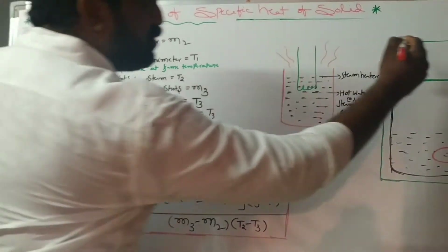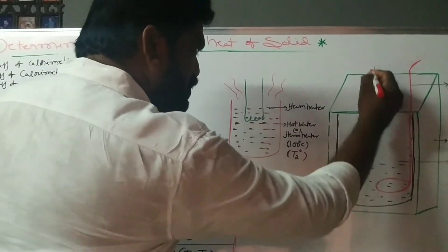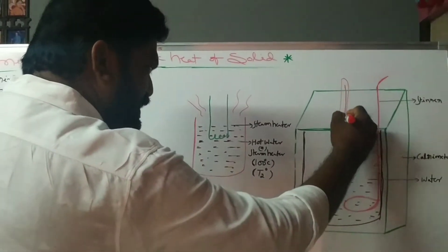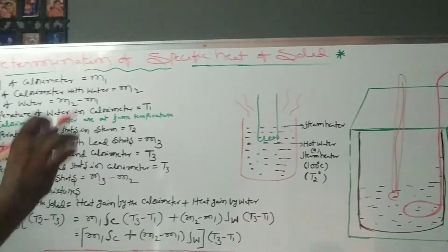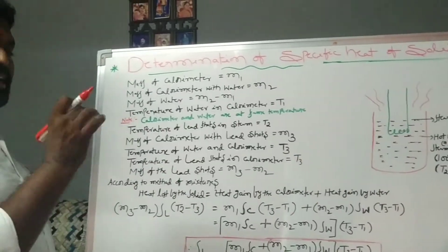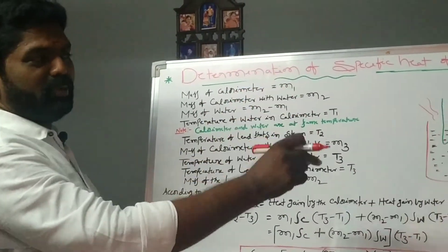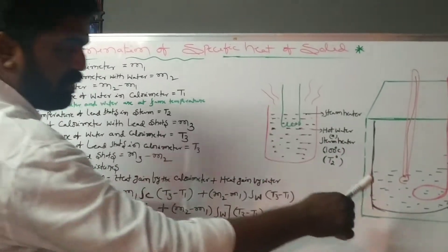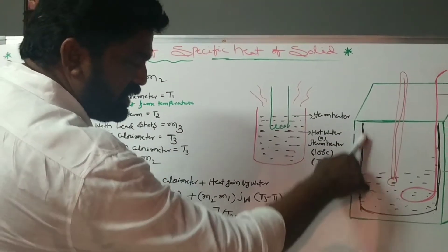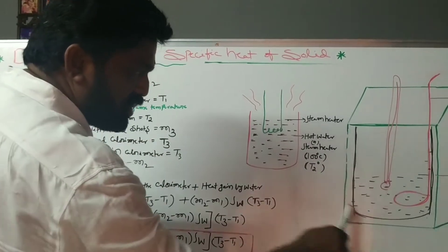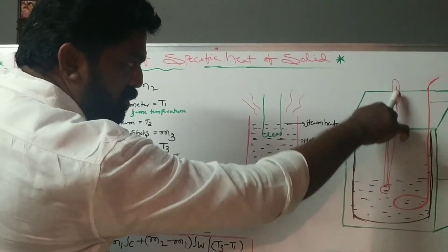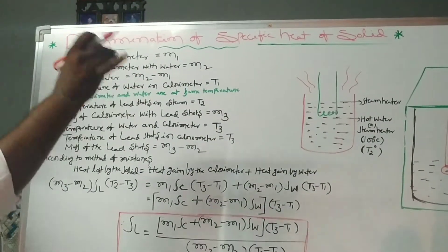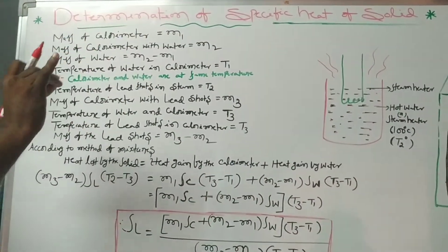Now, using the thermometer, we measure the temperature of the water and calorimeter. Both are at the same temperature. We want to measure this temperature, which is called T1. So the temperature of water and calorimeter is T1.